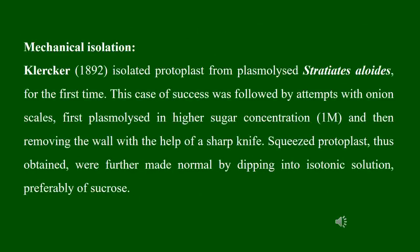In 1892, Clarker isolated plant protoplasts for the first time by plasmolysing cells of Statice. This was followed by other attempts using onion scales, which were plasmolysed in a higher concentration of sugar, and then the cell wall was removed with a sharp knife. The released protoplasts were restored to their normal shape and size by dipping them into an isotonic solution of sucrose.